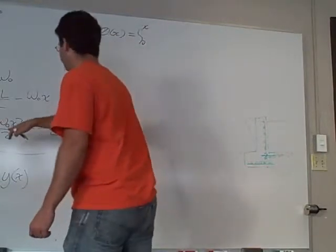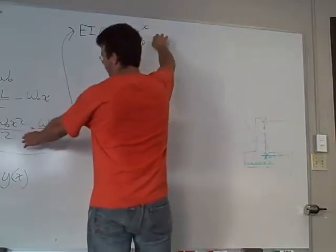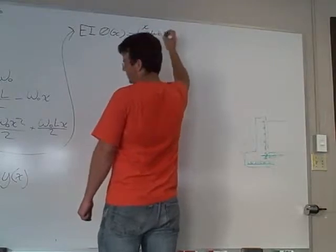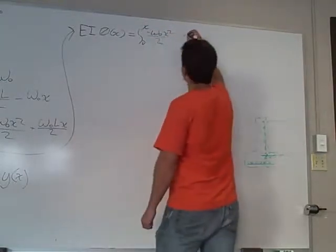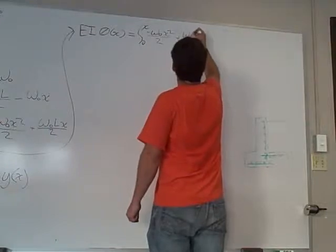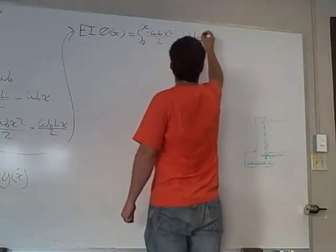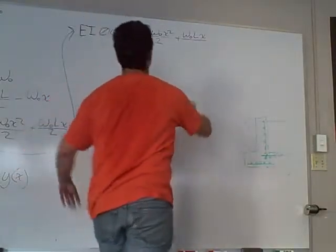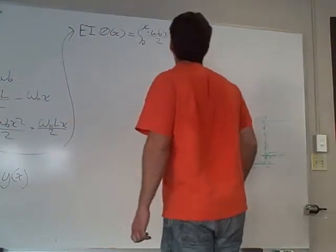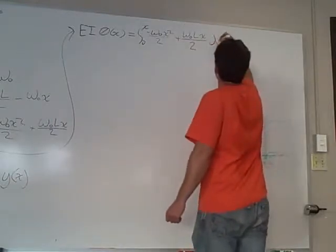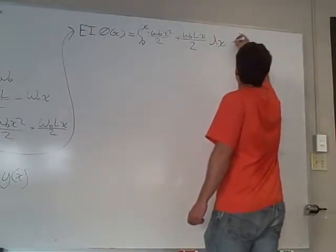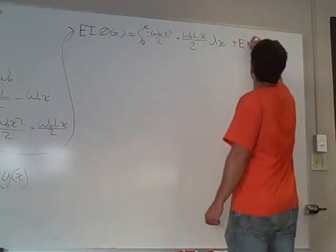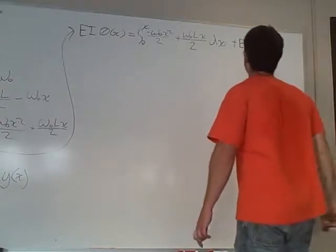So we have our moment. I'm going to bring in the moment equation. We have WLX squared over two plus WLX over two. And that's going to be integrated in X and then plus our constant of integration, which is also the EI theta of theta of naught.